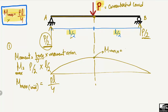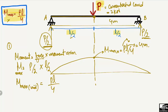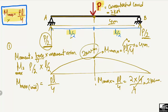The maximum moment for a concentrated load equals PL/4, where P is the magnitude of the load and L is the length of the beam. For example, if P = 2 kN and L = 4 m, then maximum moment = (2 × 4) / 4 = 2 kN·m. So 2 kN·m is the maximum moment at the mid-span of the beam.